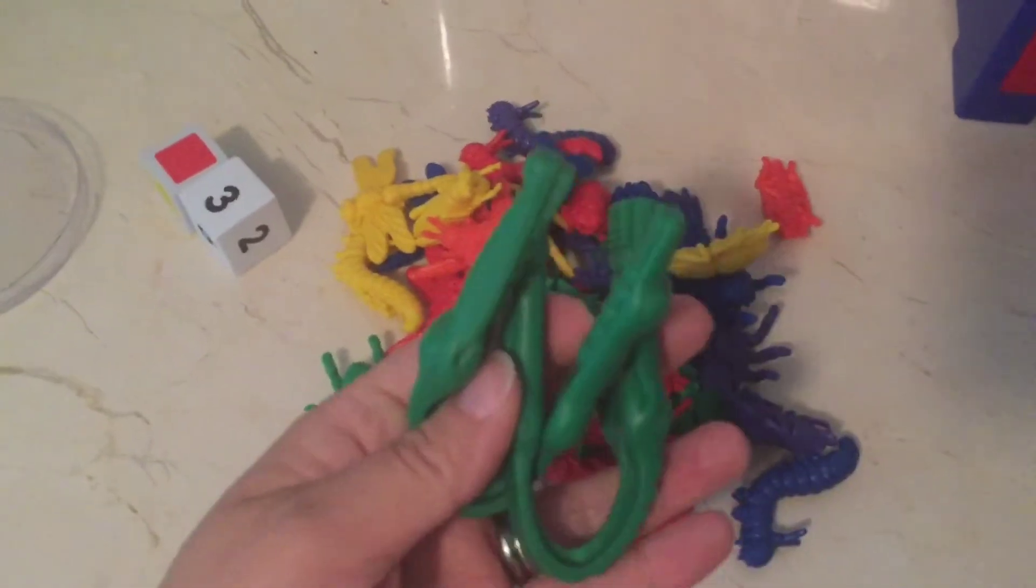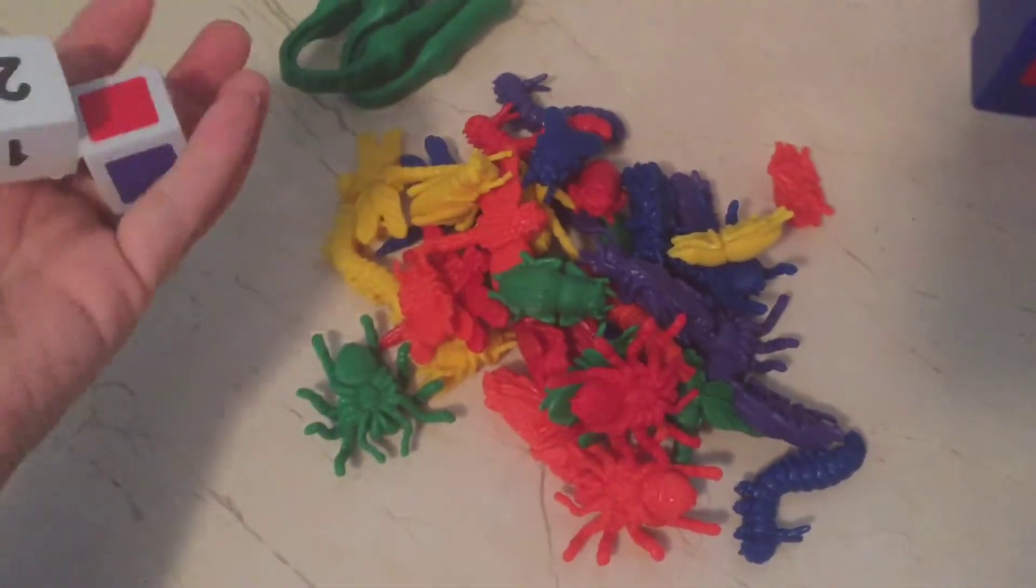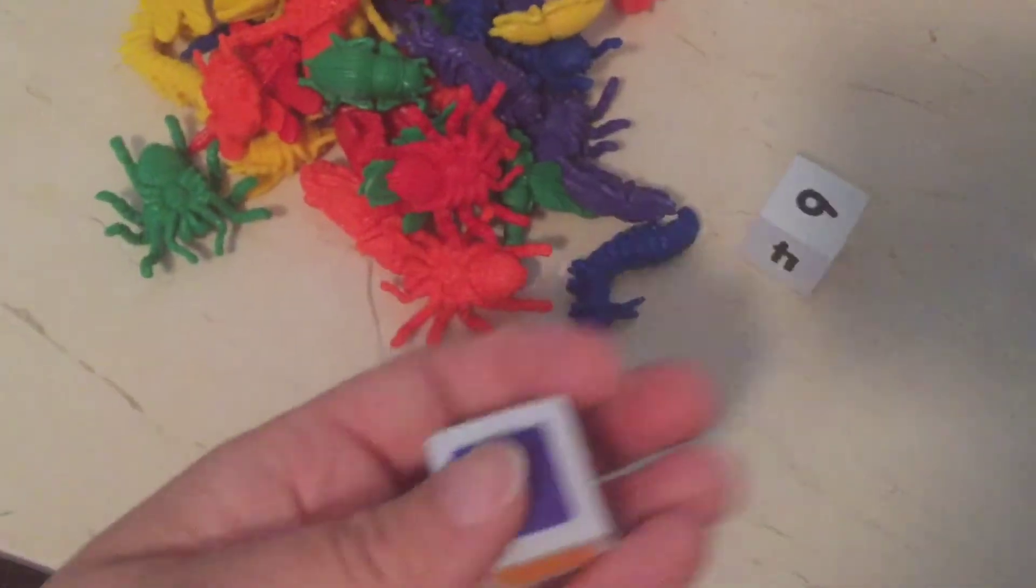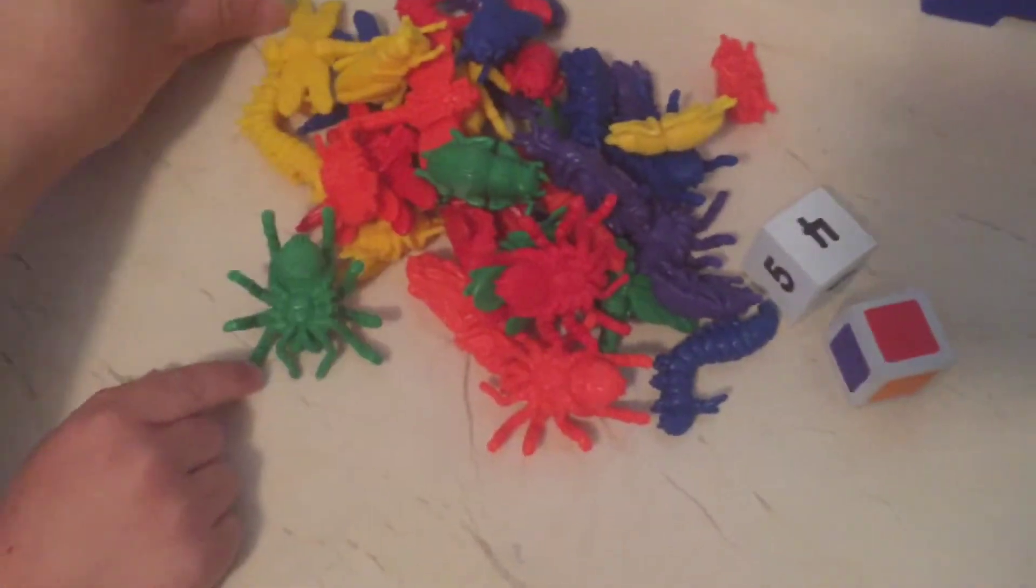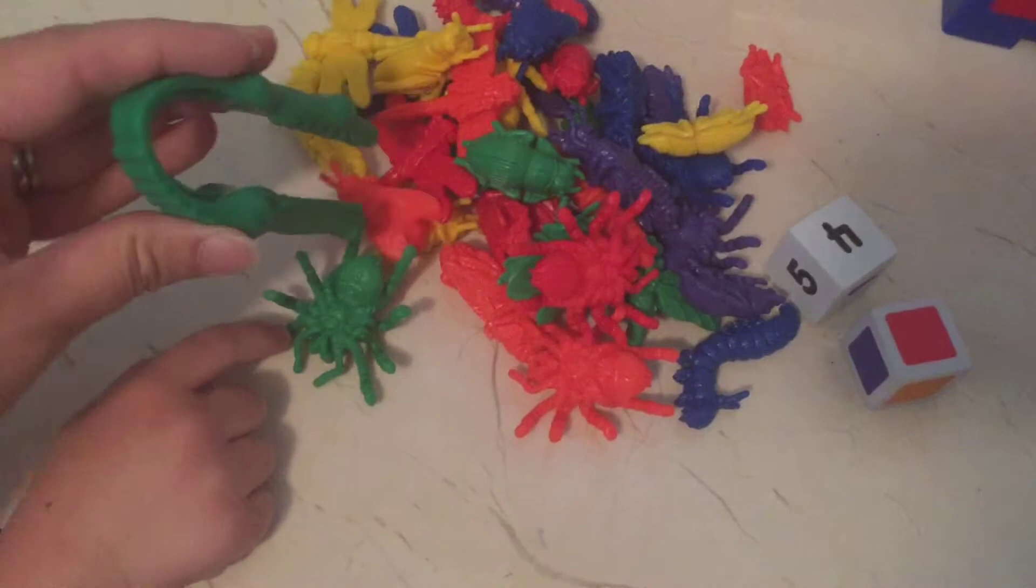Each person gets a tweezer, this only comes with two but we pass it when it's our turn. The tweezer is shaped like a crocodile. So then what you do is you get the die, you're gonna roll a number die and you're gonna roll a color die, so six red.